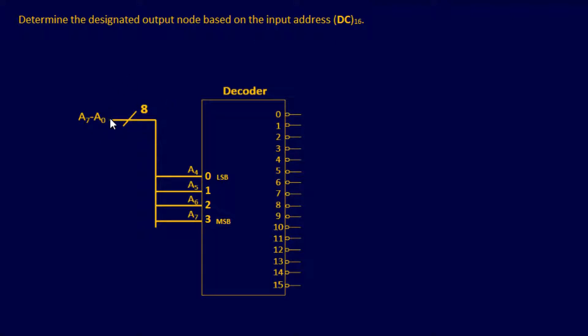So right there, that's a little bit of a curveball. And it looks like we have a decoder here that has a bus, an 8-bit bus. And it looks like it's going to be using bits A4, A5, A6, and A7 of that 8-bit bus. So there's a few things we need to find out. First of all, we need to determine the binary format of DC.